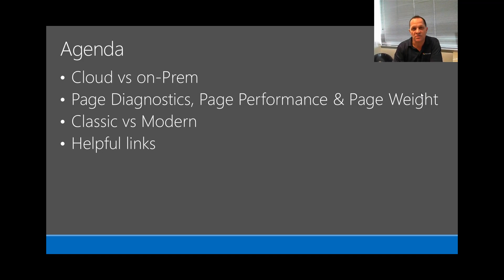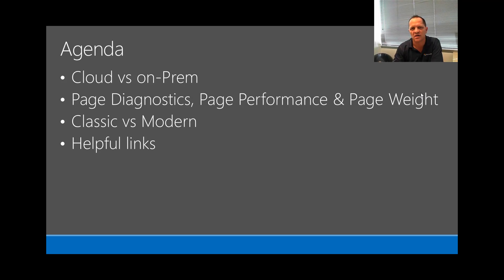Today's agenda will be covering cloud versus on-prem, and really why that's important is understanding the architecture you're potentially coming from. You may never have been in on-prem, but understanding the differences and why there are differences — it's not just a case of 'I had it on-prem, I can just put it in the cloud and use it as is.' We really need to start focusing on what optimizations are actually available to you in the cloud. We'll also look at page diagnostics, discussing page performance and page weight, classic versus modern, and helpful links.